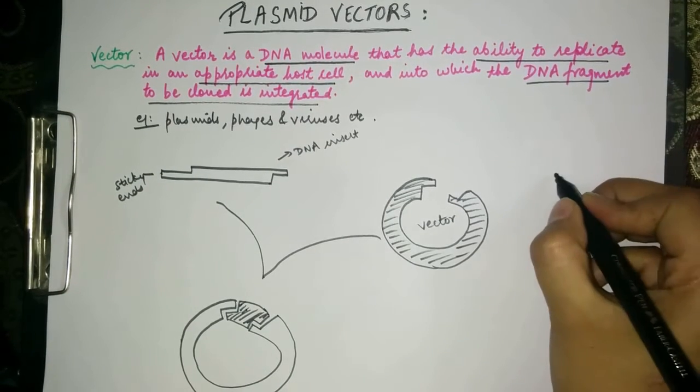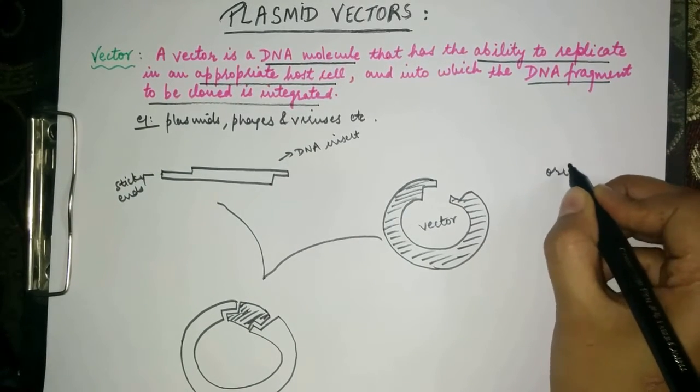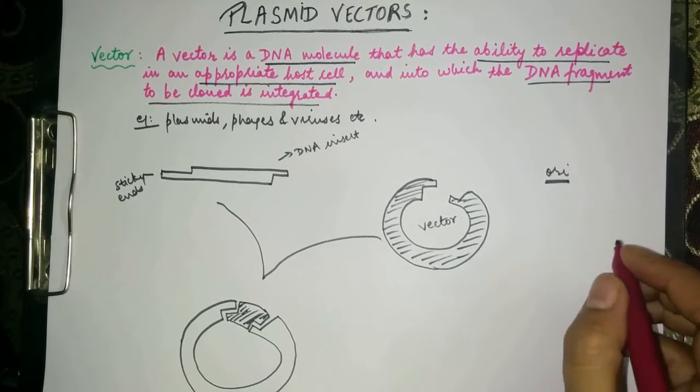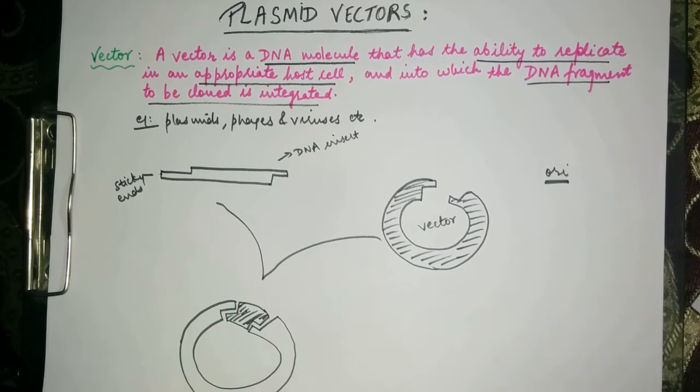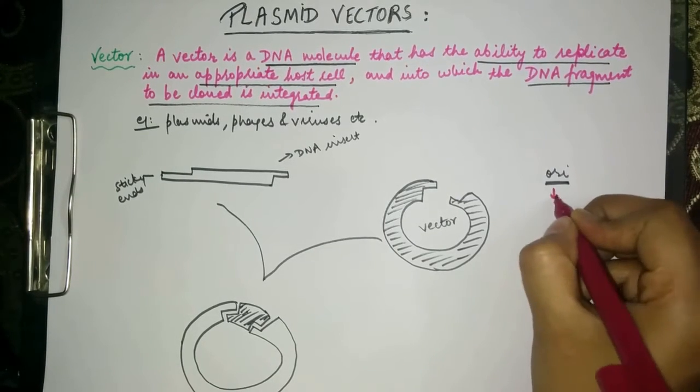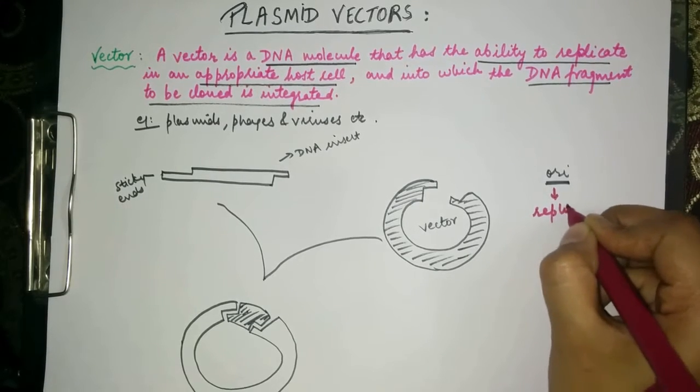Also, a vector must have an origin of replication which is abbreviated as Ori. This origin of replication is a particular sequence in a genome at which the replication is initiated. So it is a sequence at which the replication is initiated.